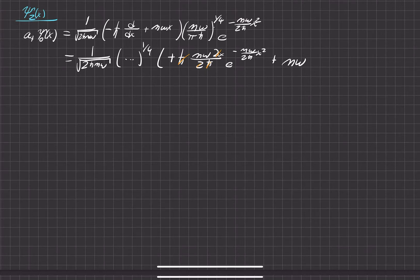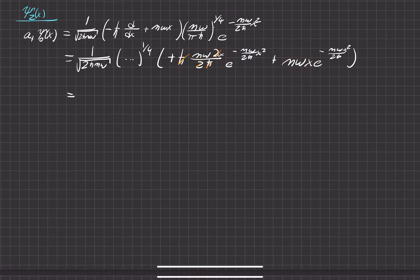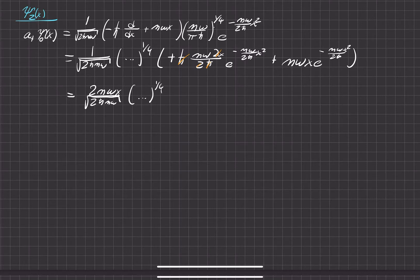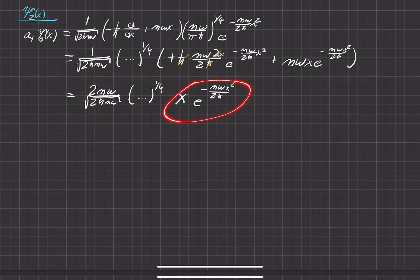The exponential remained unchanged from the first derivative of x, and then plus m-omega x times e to the negative m-omega x squared over 2 h-bar. We can see these are like terms, so we can pull that out. All that's left over is m-omega x and m-omega x, giving us 2m-omega x over 2, times h-bar m-omega all under the square root, times our global constants times the exponential e to the negative m-omega x squared over 2 h-bar.